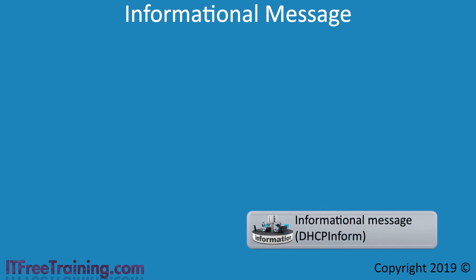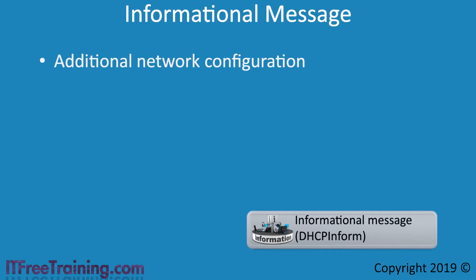The last message type is the Information message. This message is used to provide additional network configuration — for example, proxy settings. Some settings cannot be allocated using the other message types. Also, settings like proxy settings could be requested at any time, whereas the other message types are designed to provide the device with network configuration when it first starts up, not configuration it may require later on.